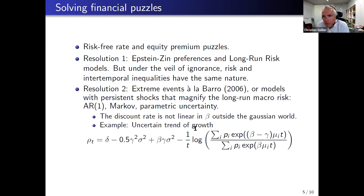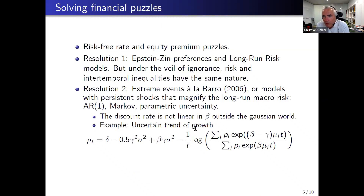If we do that calibration, we face the well-known puzzles — the equity premium puzzle. You get a risk-free rate which is too large compared to what we observe in the market, and a risk premium which is way too small. There have typically been two roads to solve this problem.